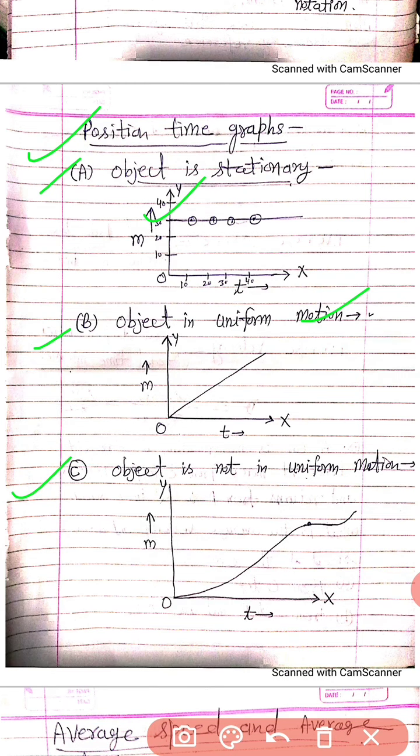मान लिया कि वो यहाँ पर 30 meter distance पर fix है. अब time का reference भी लेना है क्योंकि हम motion में चल रहे हैं. Time never waits for anyone — time किसी का इंतजार नहीं करता, time अपनी speed से चलता रहेगा — 10 seconds, 20 seconds, 30 seconds. और बारी-बारी से उसकी जो position है, वो वहीं की वहीं बनी रहेगी. तो इसका जो graph मिलता है, वो parallel to x axis मिलता है, जैसे कि आप graph में देख पा रहे हैं.